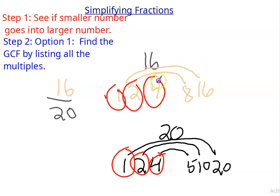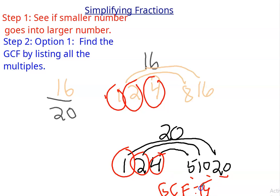Is there a 5 in both? No. 10? No. 20? No. So my greatest common factor is 4. My common factors are 1, 2, and 4. But what I'm really looking for is my GCF. My greatest common factor is 4, and that's the number you're going to use to simplify 16 twentieths by.